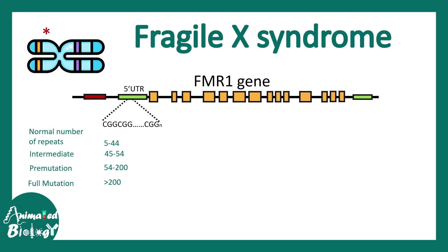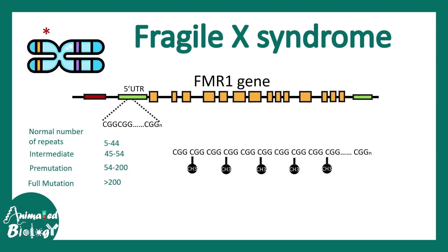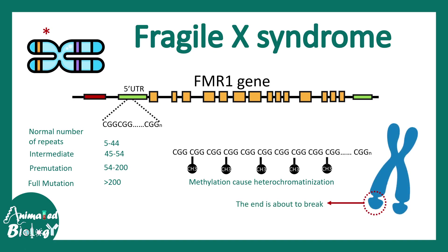In the case of full mutation, CGG repeats are more than 200 in number, and that leads to a pathogenic situation where the protein is non-functional. When there are so many CGG repeats, there is methylation of the CG residues, and these methyl groups lead to heterochromatinization. That is why the part of the chromosome where the FMR1 gene is located becomes extremely heterochromatinized and condensed, making it appear like a fragile end at the tail of the X chromosome — hence the name Fragile X.